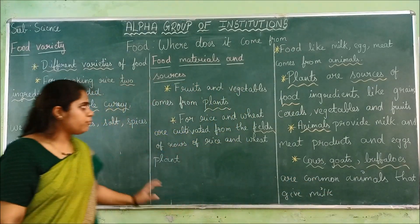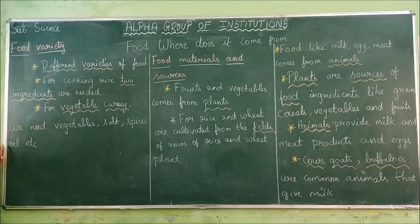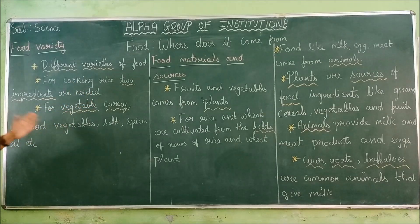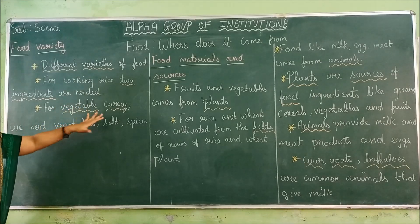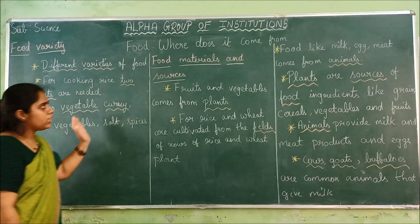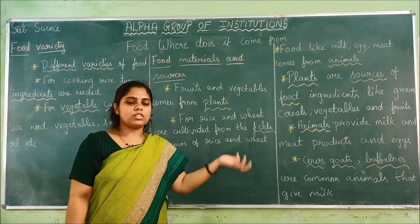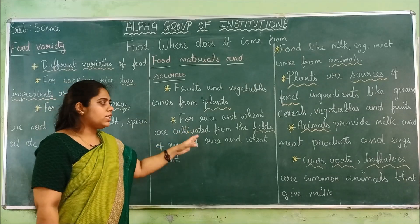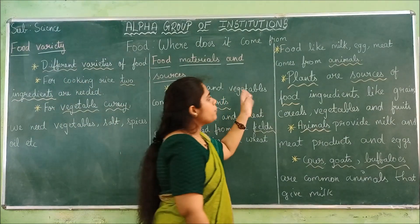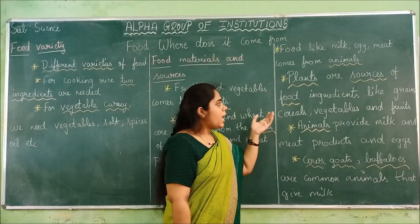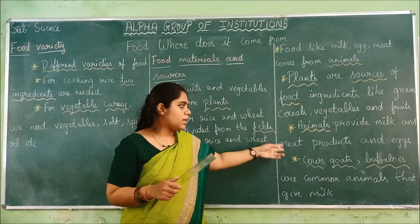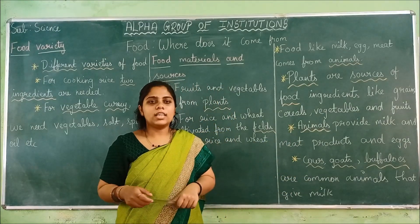Now a short recap: First we saw the different varieties of food — many types, each with different numbers of ingredients. Rice needs only two ingredients, while vegetable curry needs many. We saw that fruits and vegetables come from plants, wheat and rice are cultivated in fields, and milk, egg, and meat are obtained from animals. Cereal seeds also come from plants, and milk products like butter and ghee come from animals. Cows and goats give milk.